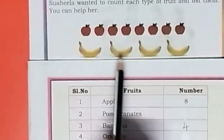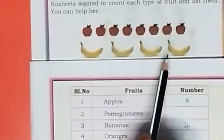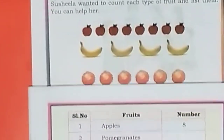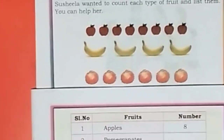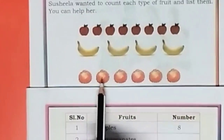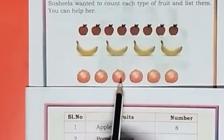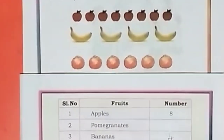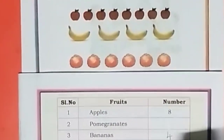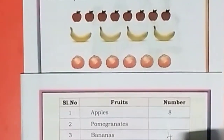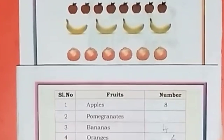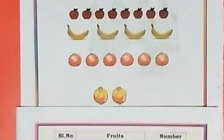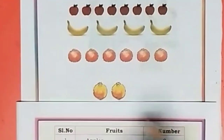1, 2, 3, 4, 5, 6. There are 6 oranges. How many pomegranates are there? 1, 2. There are 2 pomegranates.